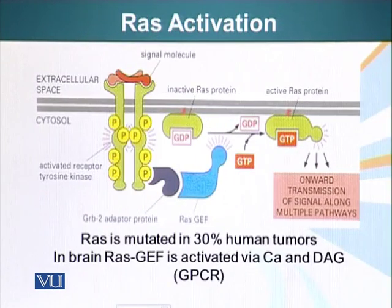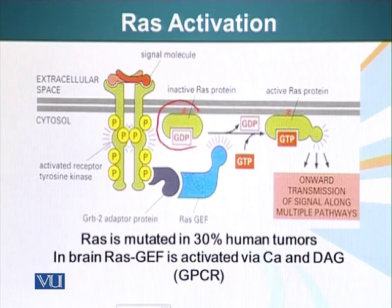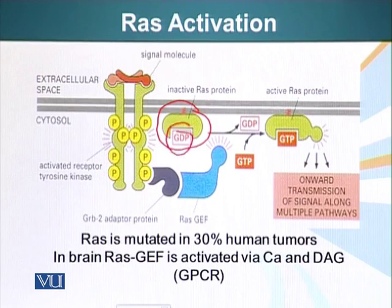Other than those two molecules, a very important molecule can also bind receptor tyrosine kinases. This molecule is similar to a G protein but slightly different — it is called RAS. This protein does not bind the receptors directly. It functions like the G protein: when bound to GDP it is inactive, and when bound to GTP it is active.